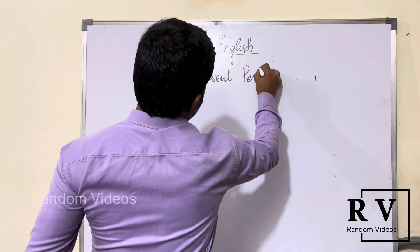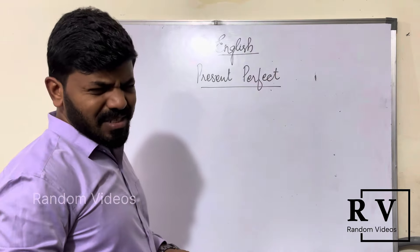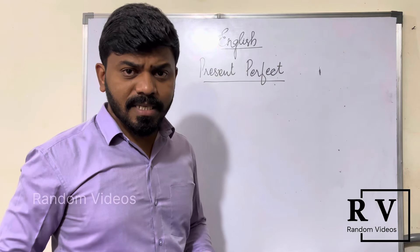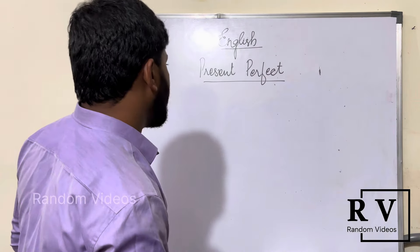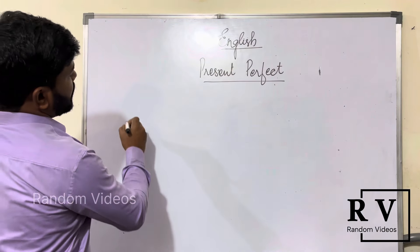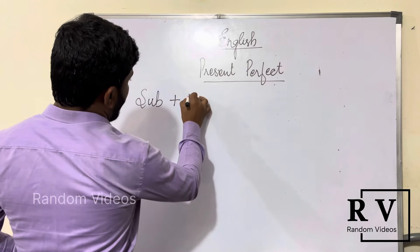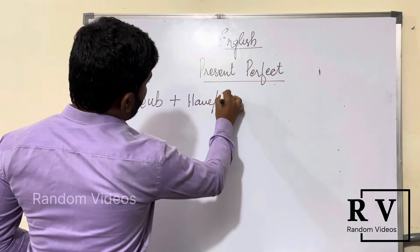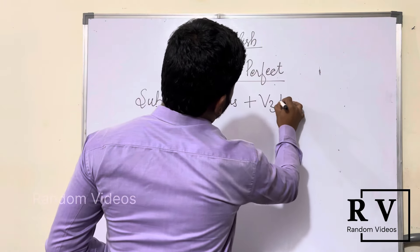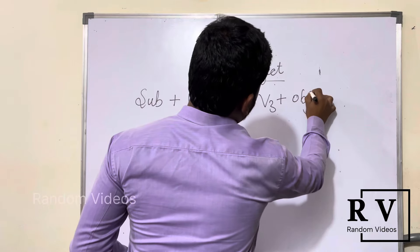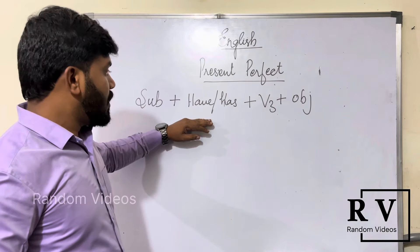Present perfect tense — this tense is very easy and simple to understand. First let us know the structure of the sentence, and further we shall discuss in detail. This is the formula of present perfect tense: subject plus have or has plus V3 plus object.